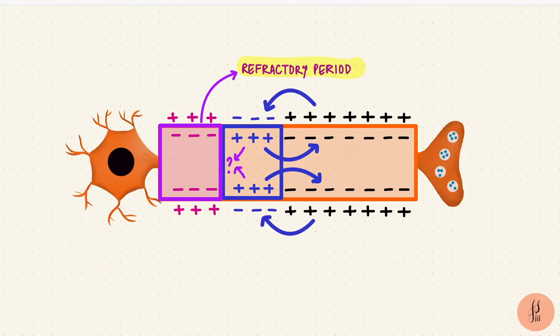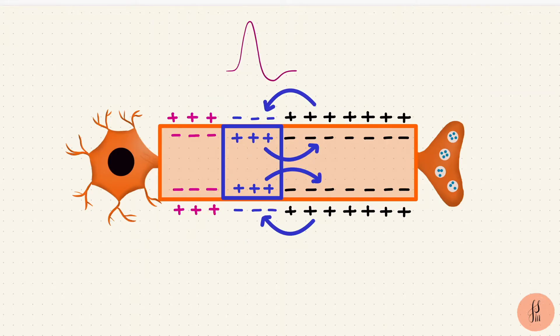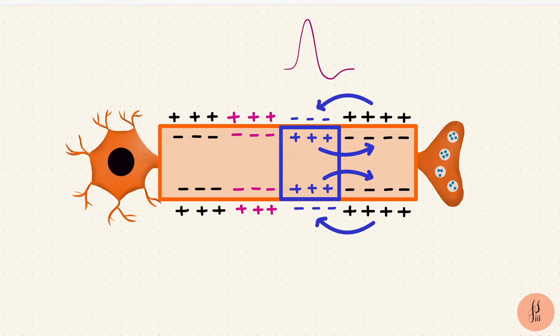Since the action potential has started in this part, it's already in its refractory period and that's why it can't go backwards. The same circular currents keep moving forward, and at each point a new action potential is getting generated. Since at each point the membrane has to be brought up to threshold, and then the action potential has to happen, it's to the same extent every time the membrane depolarizes to threshold. It's not like a graded potential which would decay with distance.